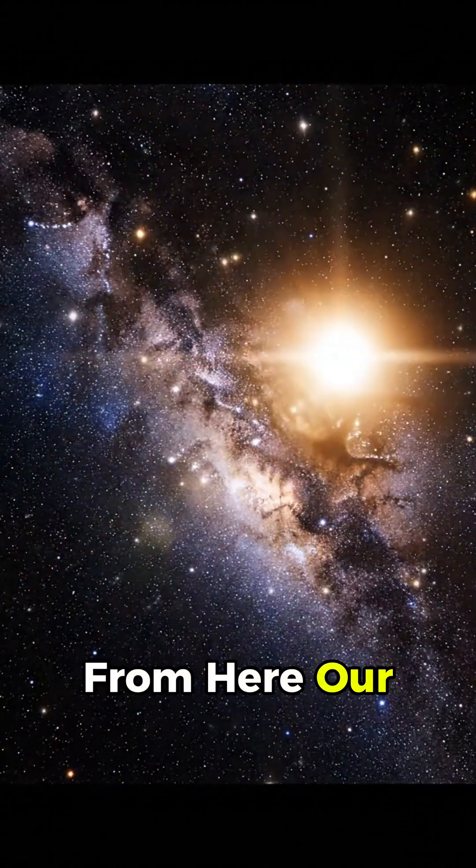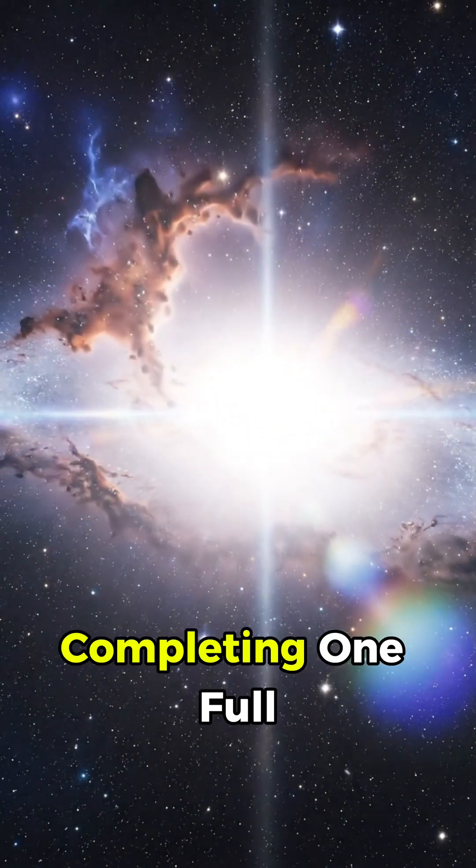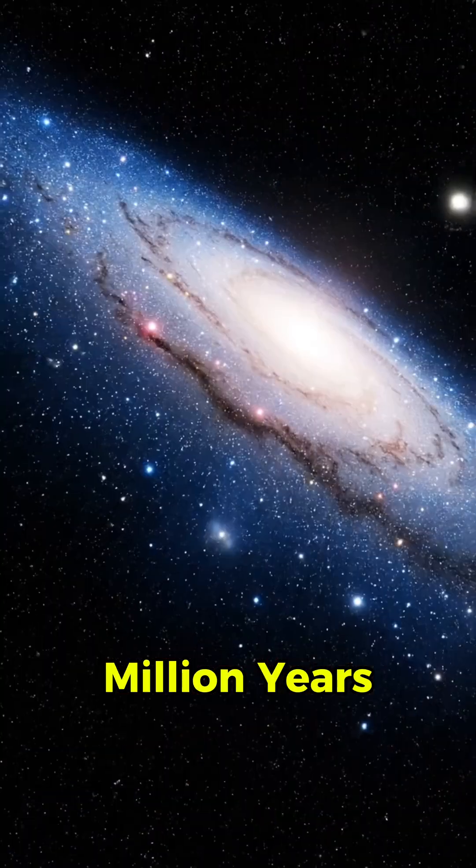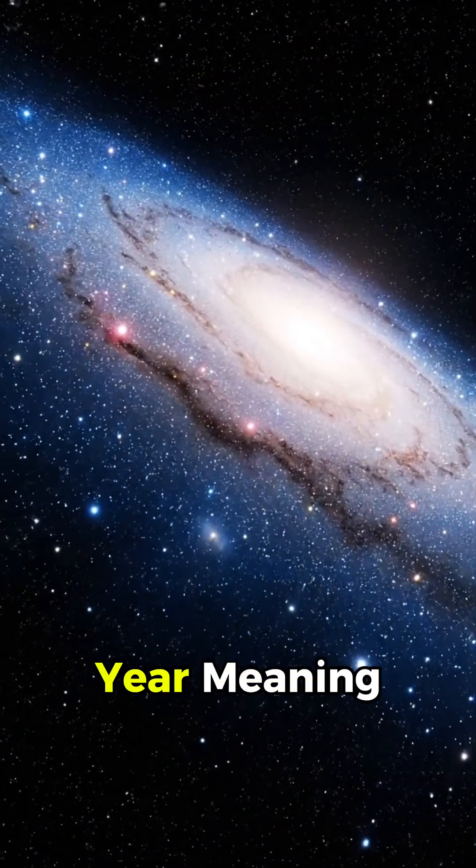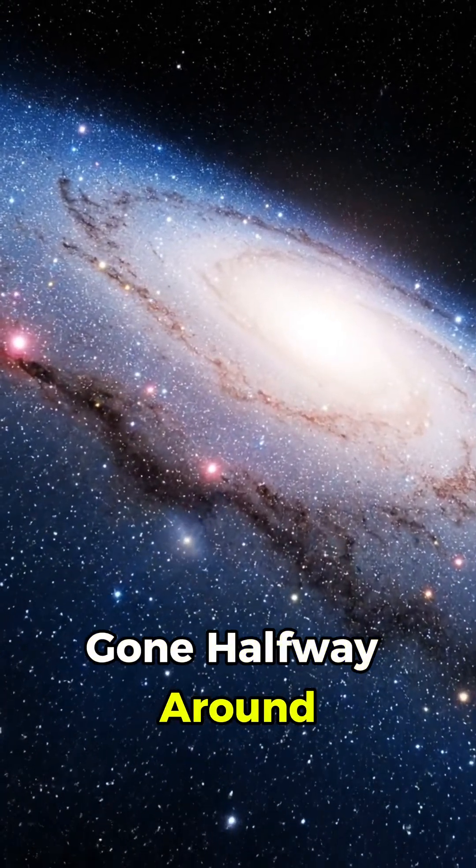From here, our sun drifts through a sea of stars, dust, and invisible dark matter, completing one full orbit every 230 million years, a single galactic year, meaning dinosaurs lived and died before we'd even gone halfway around once.